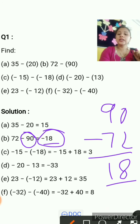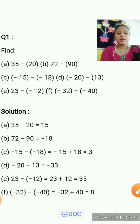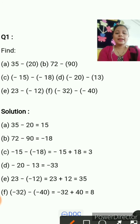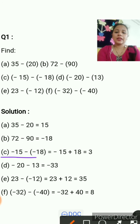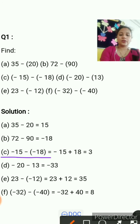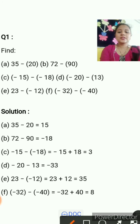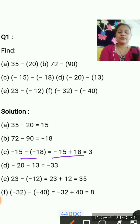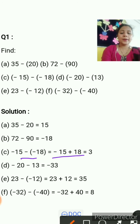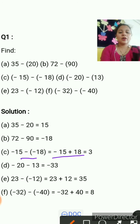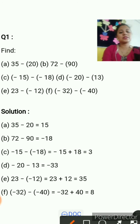Next is minus 15 minus minus 18. As you know, minus minus is plus, so we write it as minus 15 plus 18. Now subtract 15 from 18 and you get 3, and it is positive 3 because 18 is the greater and it is positive.